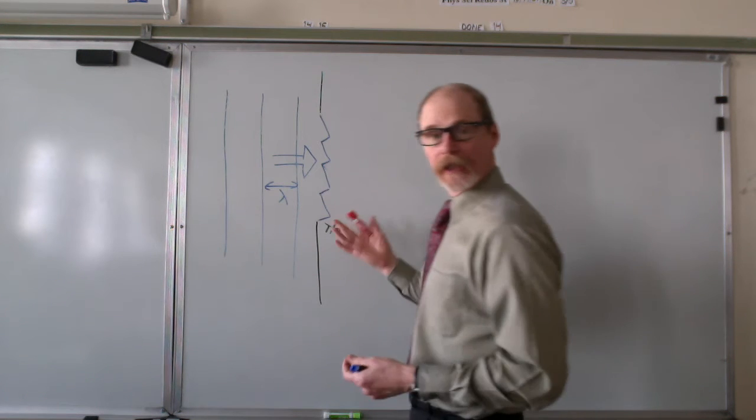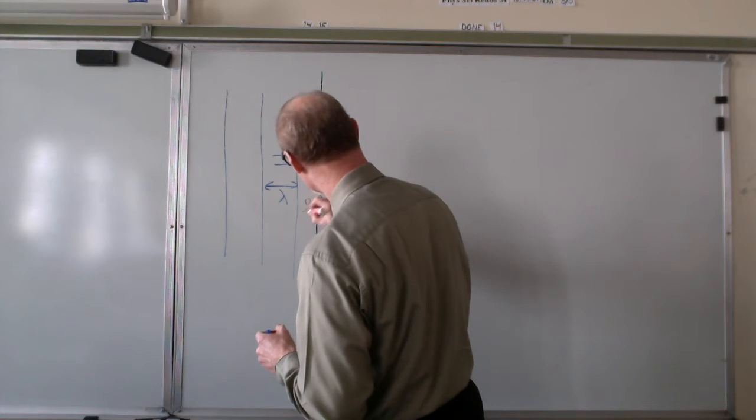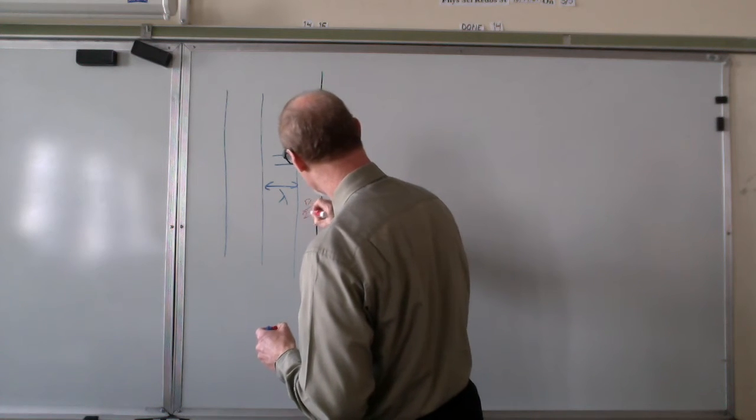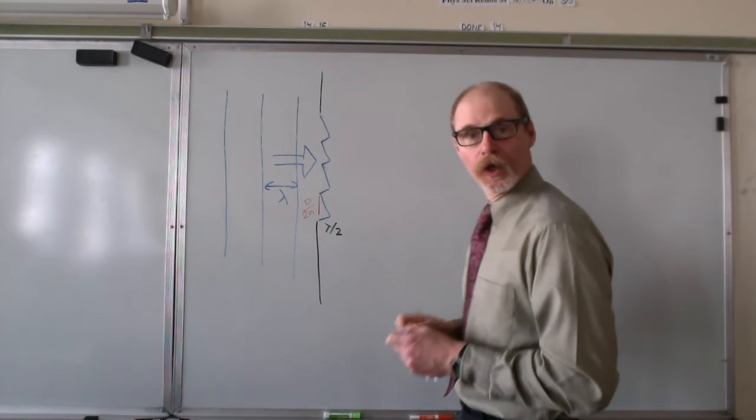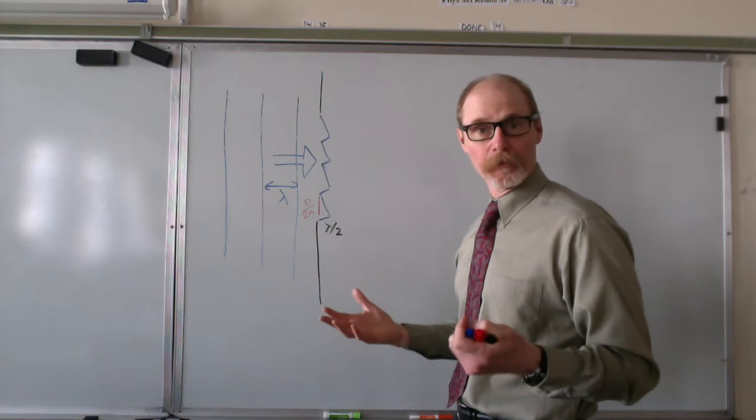The length of the hypotenuse of this triangle is d over 2n, where n is the number of the node, the number of the minimum.